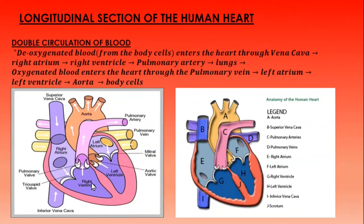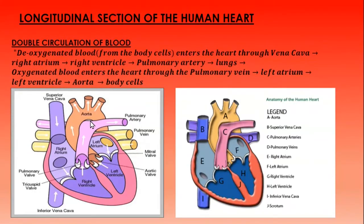From the right atrium, blood moves into the right ventricle. At this level, the heart uses pressure to pump the deoxygenated blood into the pulmonary artery. The pulmonary artery divides into two branches — one going to the left lung and the other to the right lung. The blood goes to the lungs to get rid of carbon dioxide and receive oxygen through respiration.